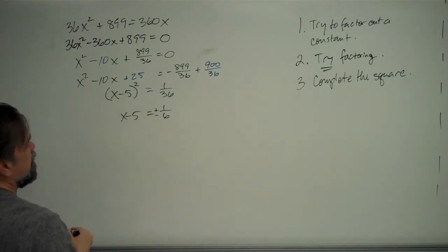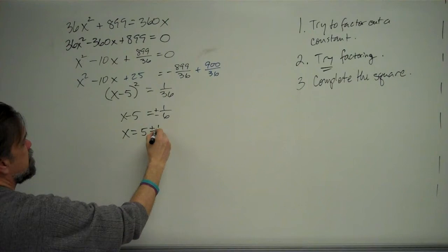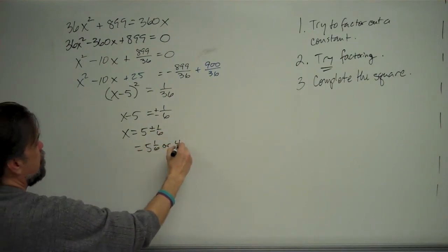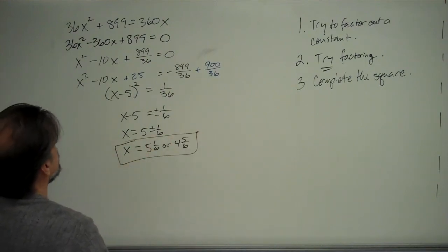So now we have x minus 5 equals plus or minus 1 sixth. Add 5 to both sides and you get 5 plus or minus 1 sixth, which is 5 and a sixth or 4 and 5 sixths. And that is our answer.